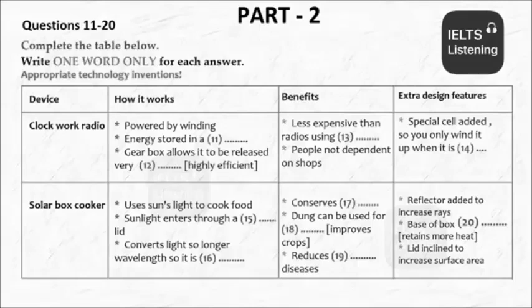You will hear a discussion between three students — David, Joseph, and Carrie. In the first part of the discussion, they will be talking about lounges in different school buildings on campus. First, look at questions 21 to 24.